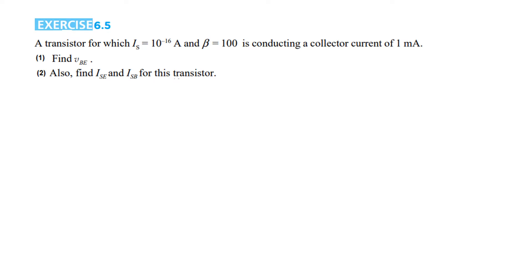Exercise 6.5: we have a transistor for which the scale current or saturation current IS is given and beta is given. It is conducting a collector current of 1 milliampere. The first step is to find VBE, and then we have to find ISE and ISB — the saturation current of the emitter and the saturation current of the base.